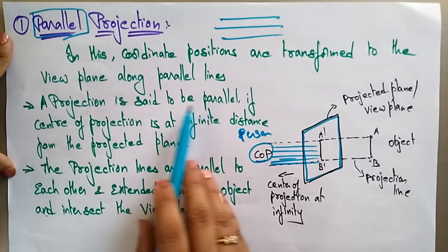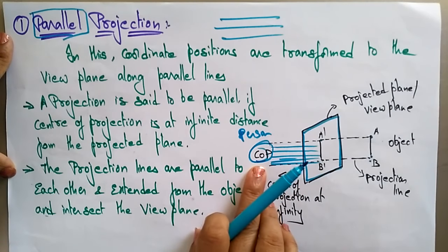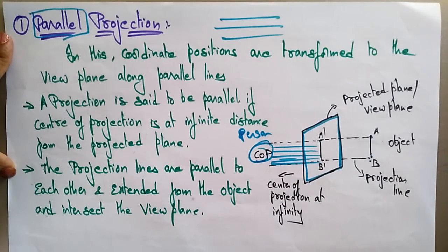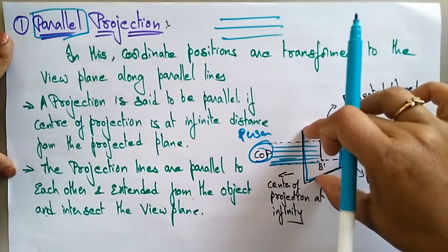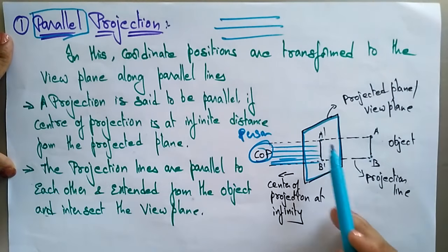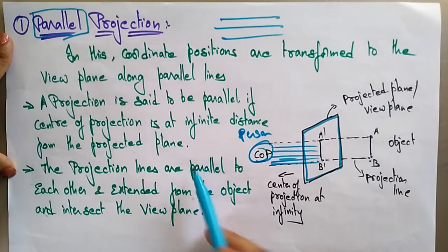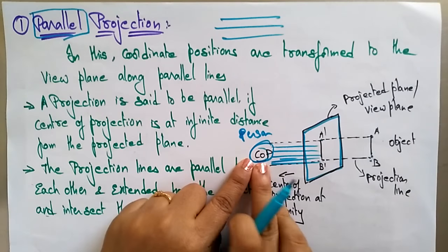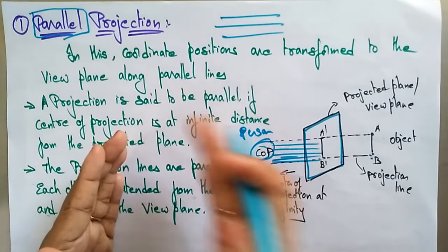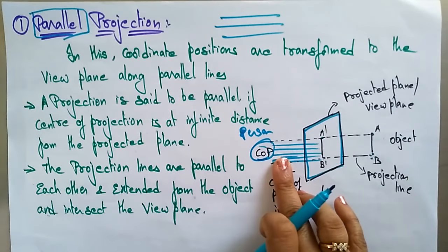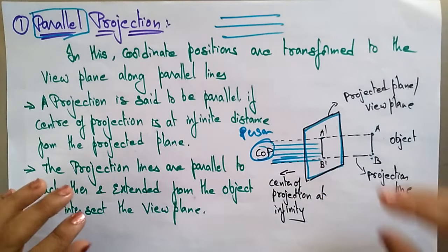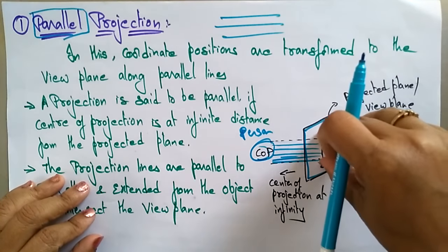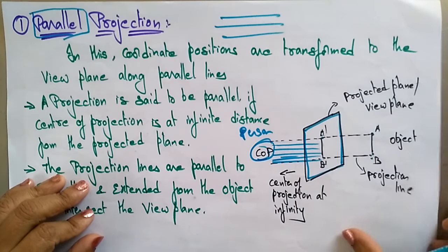A projection is said to be parallel if the center of projection is at infinite distance from the projected plane. If it is present at infinite distance from the projected plane, the image will travel parallelly. Suppose if it is present at one finite point, the seeing of that object is not at infinity — then it is not a parallel projection. The object on the projection plane appears as A-dash B-dash.